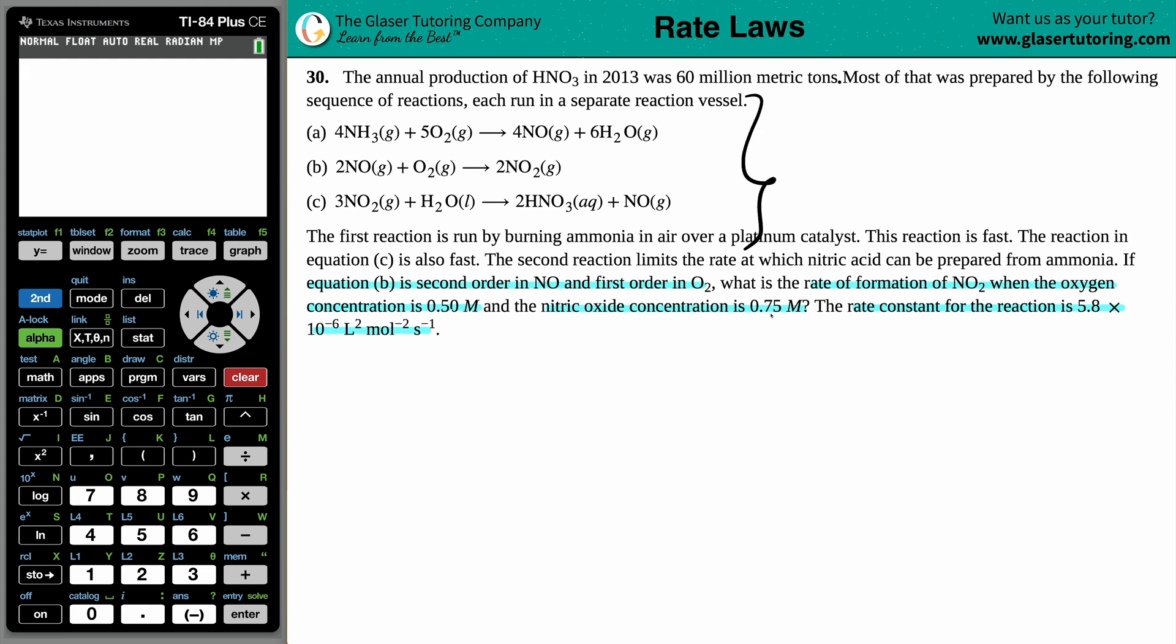A lot of words here for basically just the last part of the question is the most important part. All of these equations that are fast doesn't really limit the rate, so we can't really get any information on them. So we don't care about reaction A, and we don't care about reaction C, because they did state that both of them were very fast. Now, reaction B is basically what we are using to find the answer to the question.